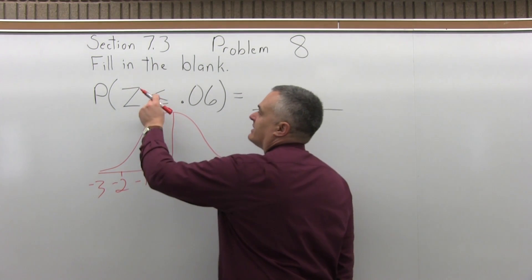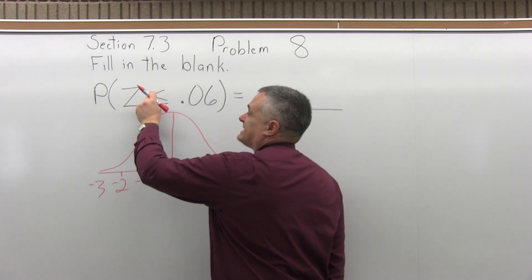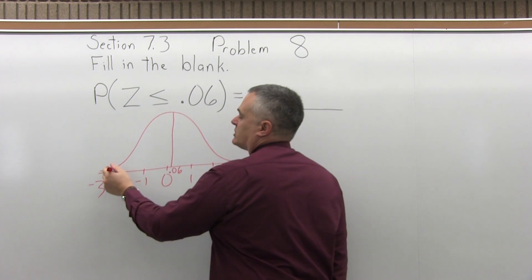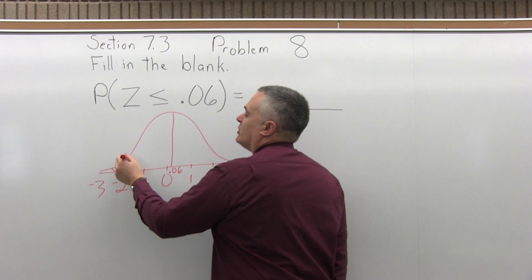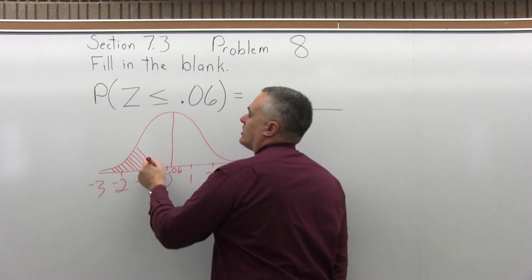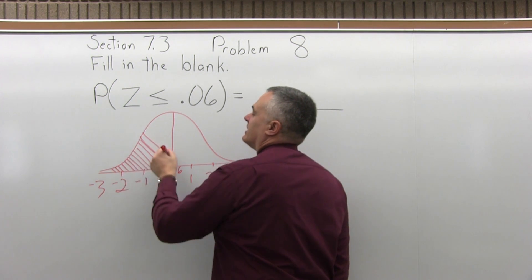So the question asks us to find the probability of being less than or equal to 0.06. So less than is the area to the left of that value on our graph. So we're looking for this shaded area.